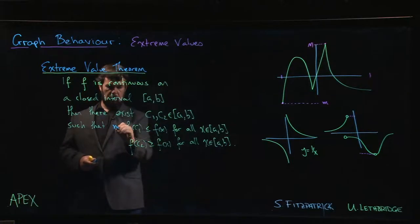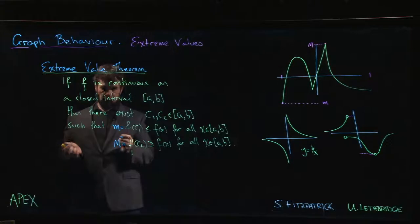So this f of c1, that's your absolute minimum, your smallest value. f of c2, that's your absolute maximum, your largest value.